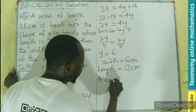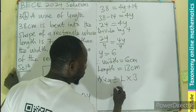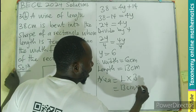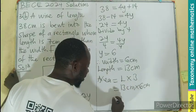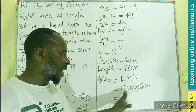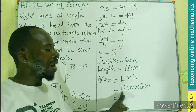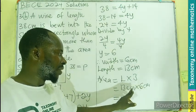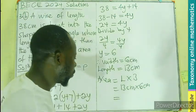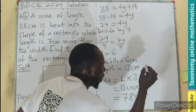So area equals the length times the breadth, which is going to be 13 cm times 6 cm. You know this will be 10 plus 3, so 10 times 6 will be 60 plus 3 times 6, that will be 18. So 18 plus 60 will give you 78 cm squared.